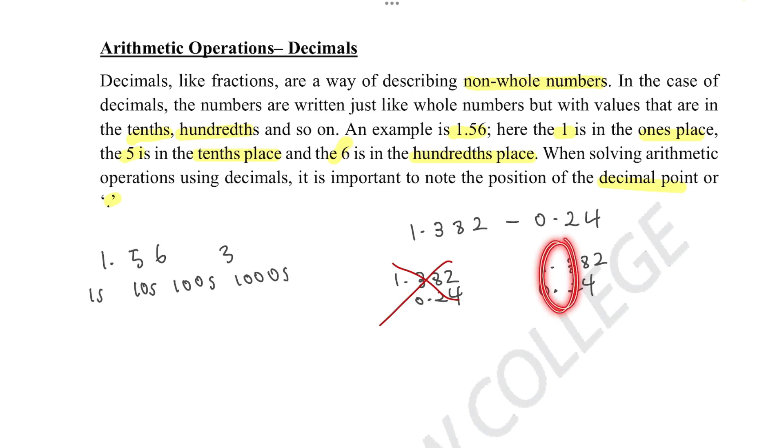As you can see, the dots are in the same place. Now we can quickly do this subtraction. 2 is 2, 8 minus 4 is 4, 3 minus 2 is 1, and 1 minus 0 is 1. So therefore the answer is 1.142.